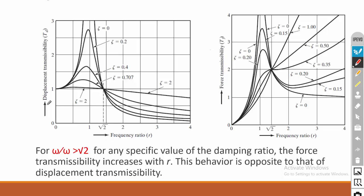The transmissibility curve for Case 2 is similar to the previous case. For omega/omega_n greater than root 2, the transmissibility ratio will be less than 1 for all damping factors. For r less than root 2 the transmissibility ratio will be high. However, this refers to displacement transmissibility. In the case of force transmissibility, at r equal to root 2 the force transmissibility is 2.